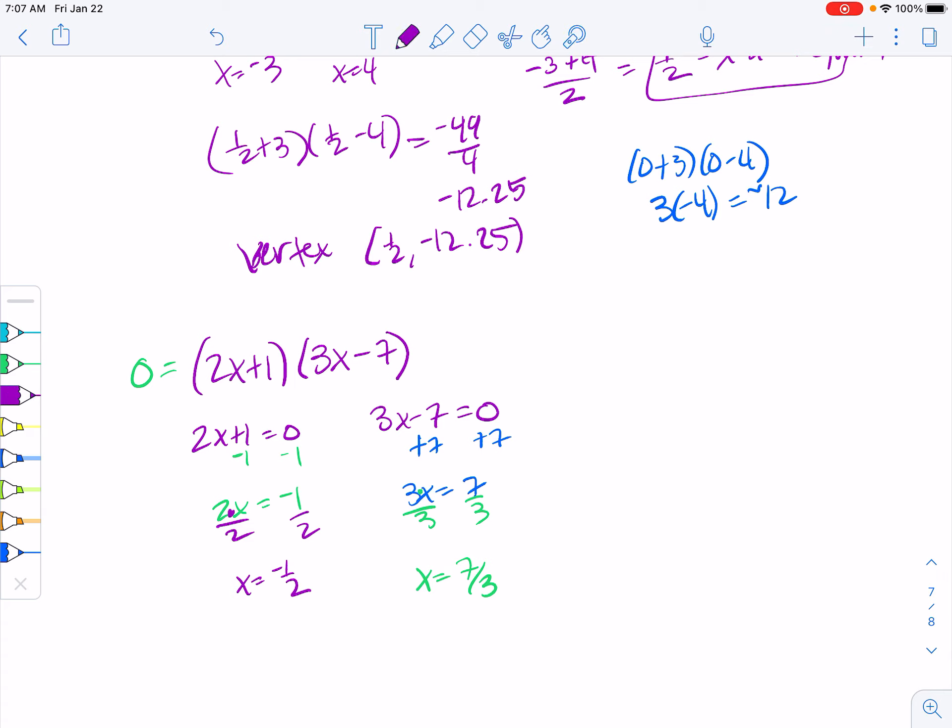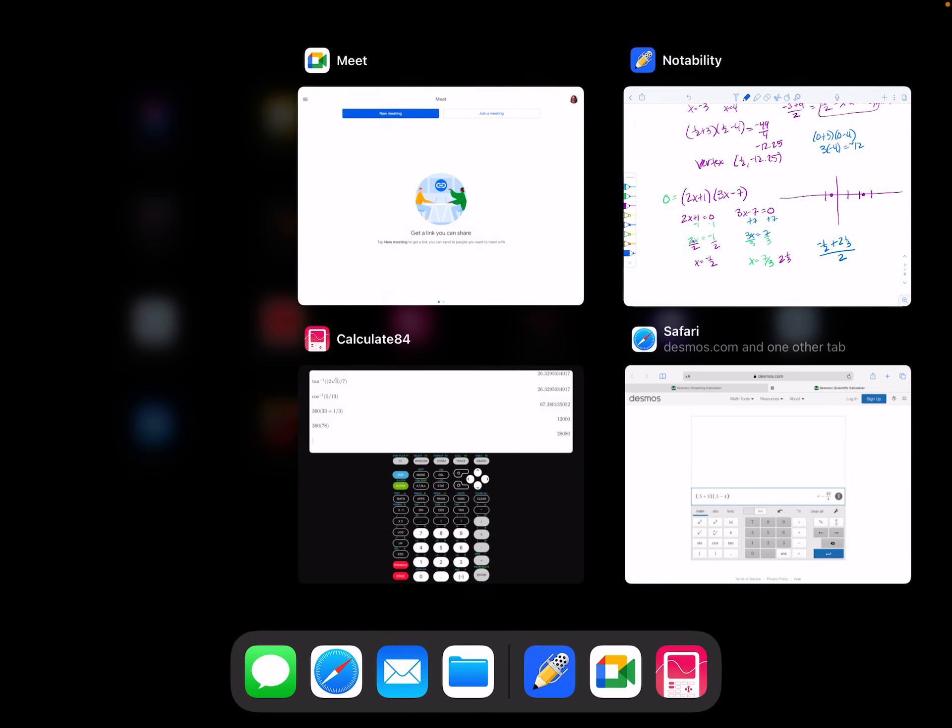If we look at our x-intercepts here, we have x is negative 1 half, and then 7 thirds. 3 goes into 7 twice, and then you have 1 left over. So 2 and 1 third is about there. Now it's nice where we can find the axis of symmetry using math instead of counting because we've got partial parts. So we're going to do negative 1 half plus 2 and 1 third, and we cut that amount in half, and that will tell us where our vertex is.